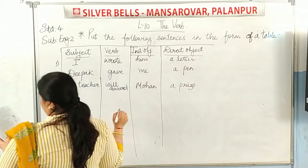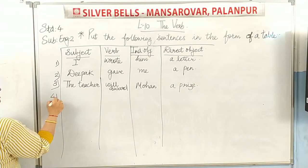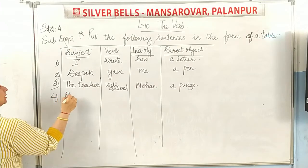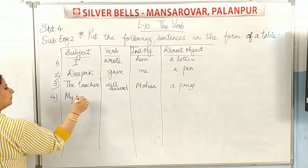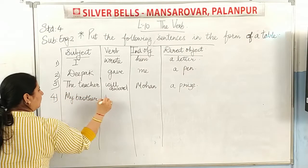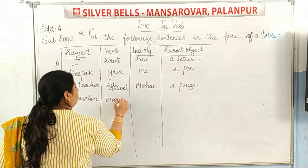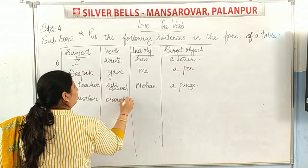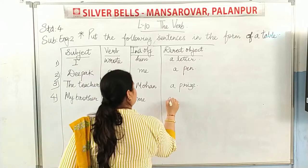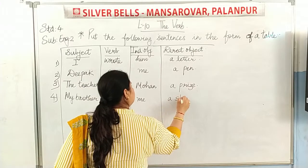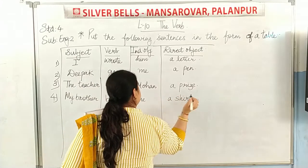Now fourth: 'My brother bought me a shirt.' My brother is the subject, bought is the verb, me is the indirect object, and a shirt is the direct object.